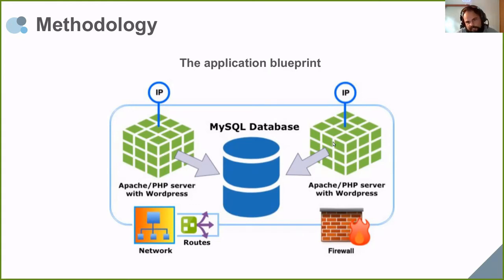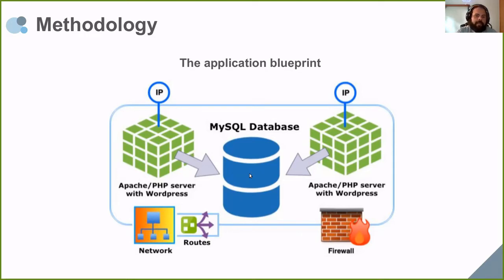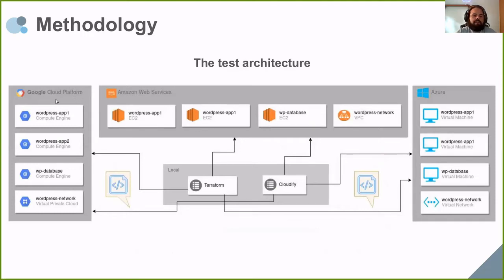Another instance is also configured with Apache, PHP, and WordPress — both of them with external IPs. Another instance here is configured with a MySQL database, with both WordPress instances pointing to this database. Additionally, network, routes, and firewall are all configured by the cloud orchestrator automatically. We defined this and made a blueprint for each cloud provider and each cloud orchestrator.